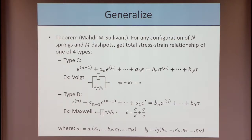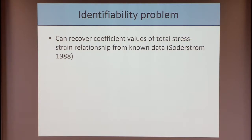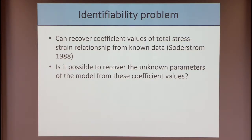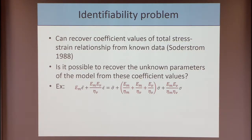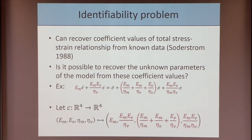Now let's talk about the identifiability problem. In the classic setup, we assume we can recover values of the coefficients of our total stress-strain relationship from enough known input-output data — in our case, stress and strain data. The question is: can we recover values of the parameters from these coefficients? Looking at the Burgers model example, we're assuming we know the four coefficients (in red), and the question is whether we can determine the four individual parameters E_m, E_v, eta_m, and eta_v. Equivalently, we're asking whether the mapping from our four parameters to these four coefficients is one-to-one.